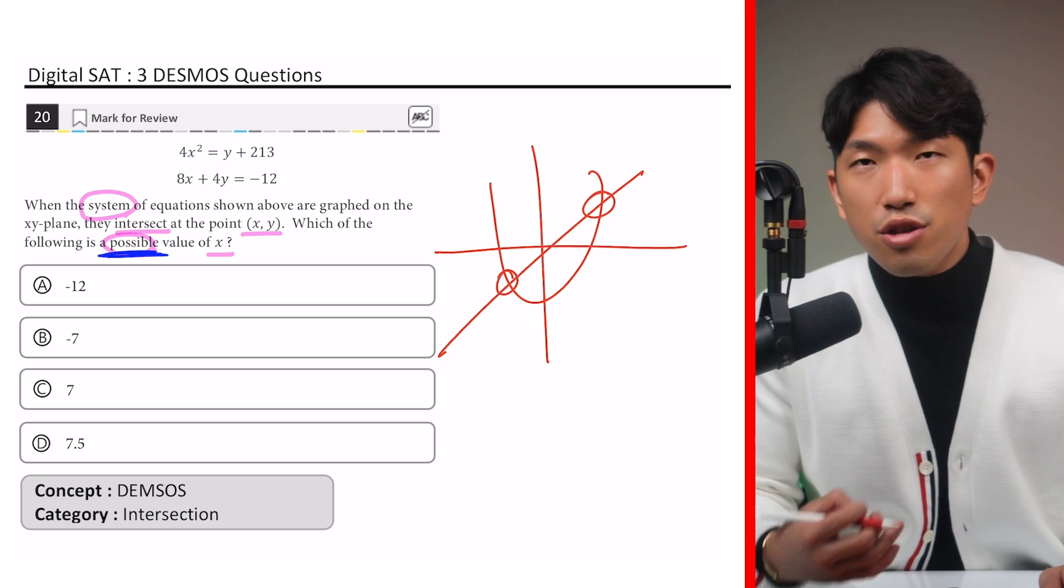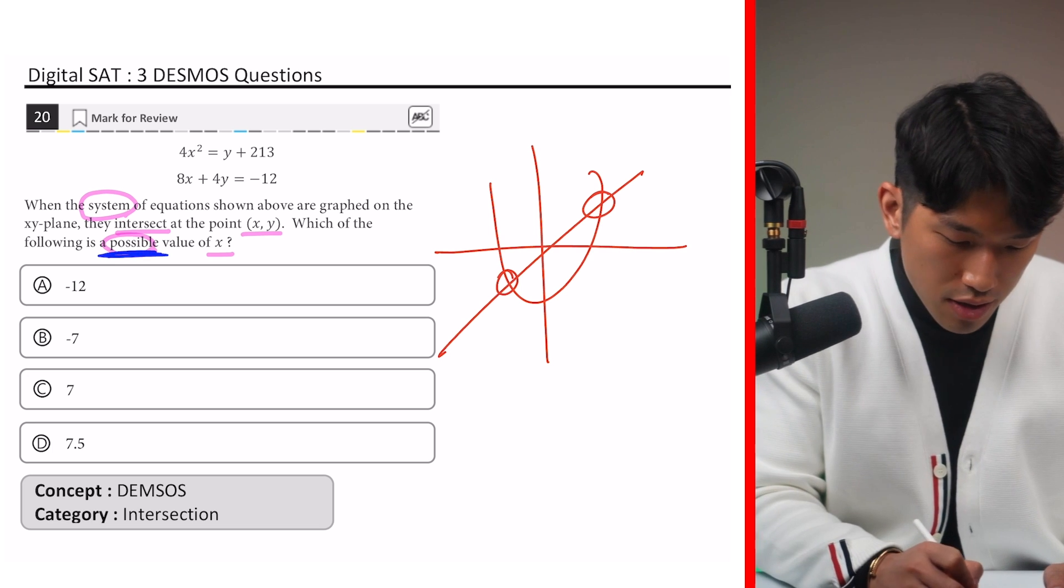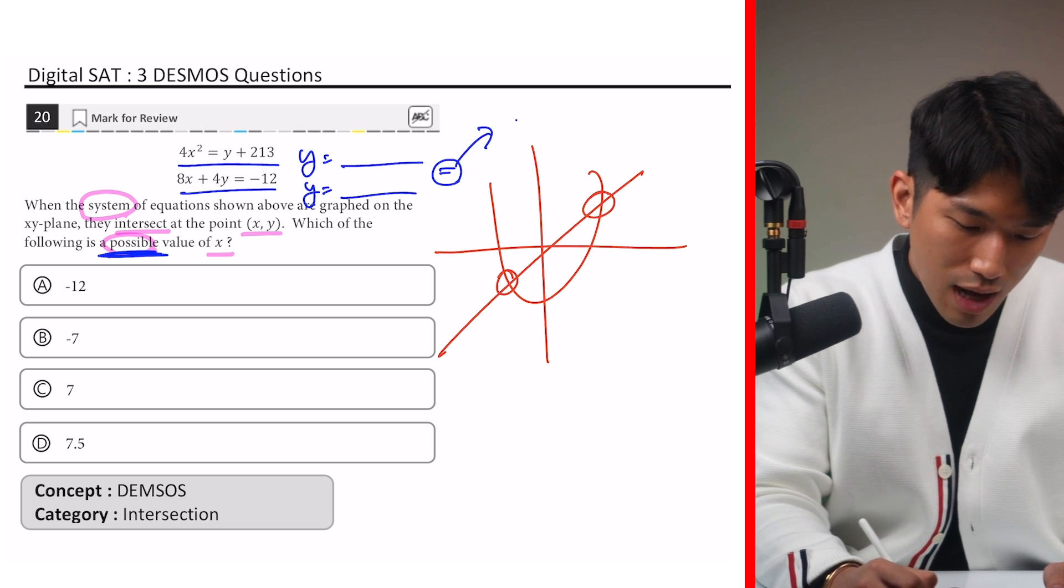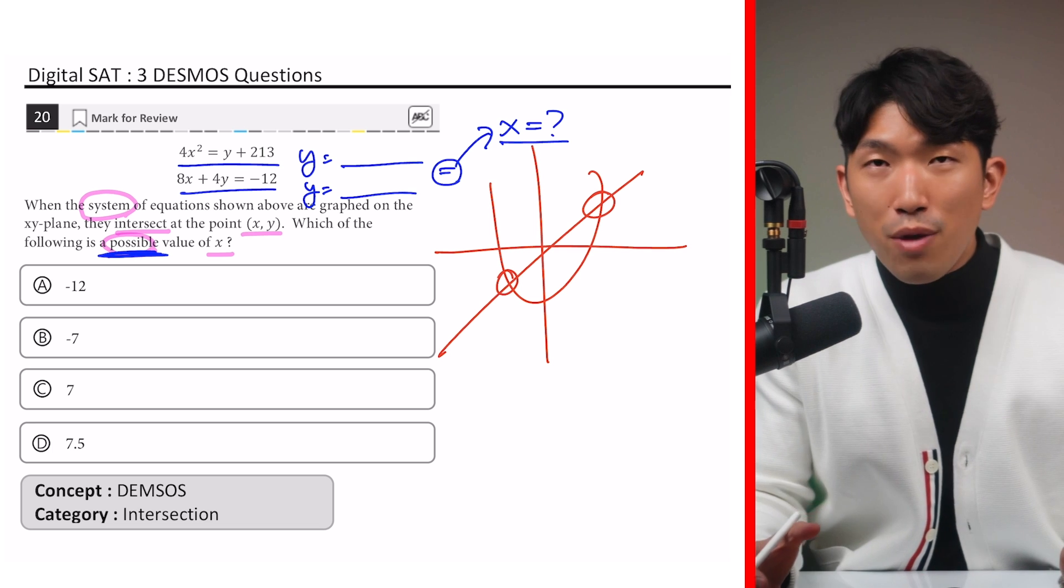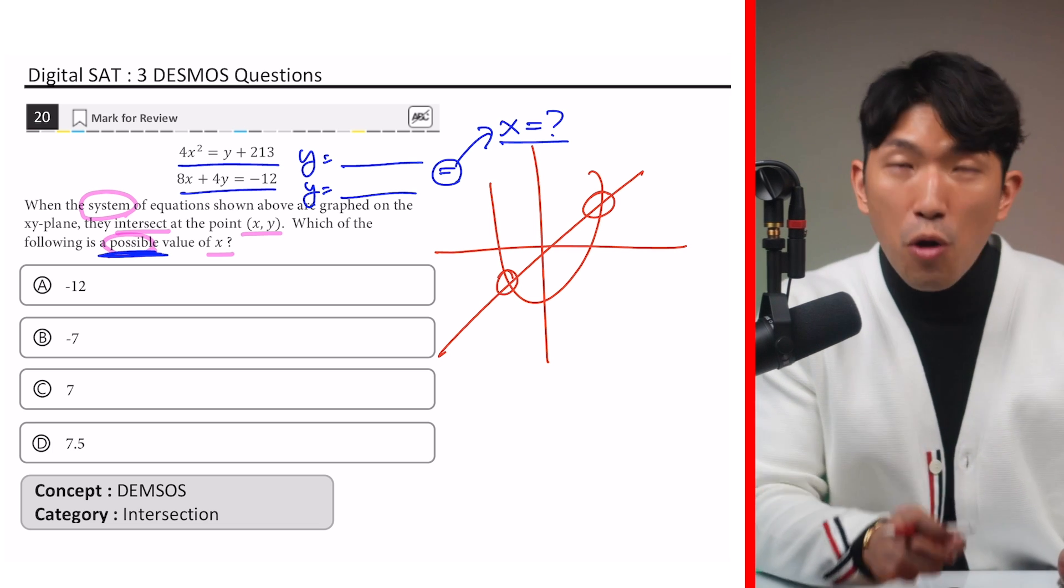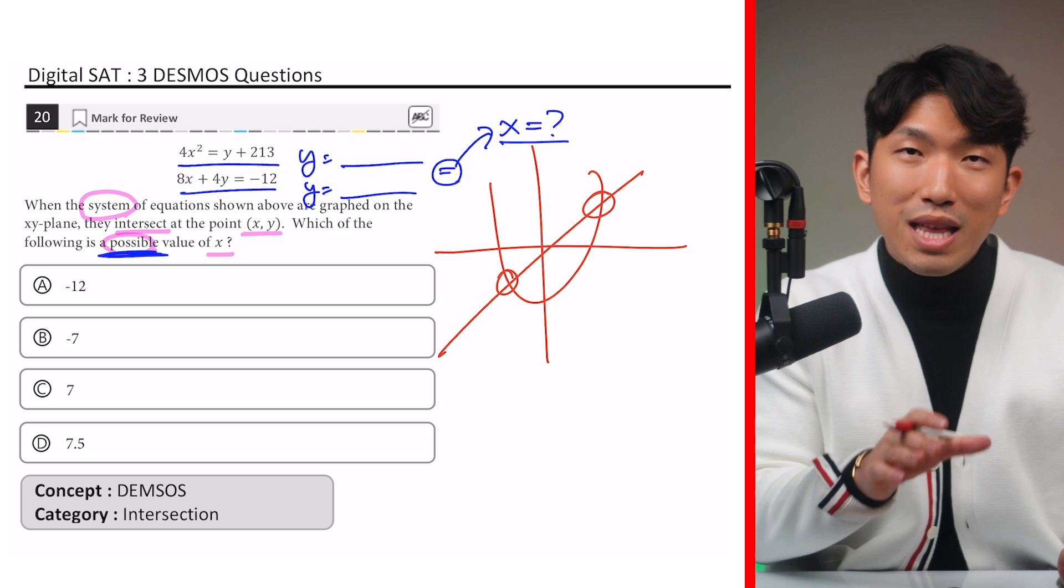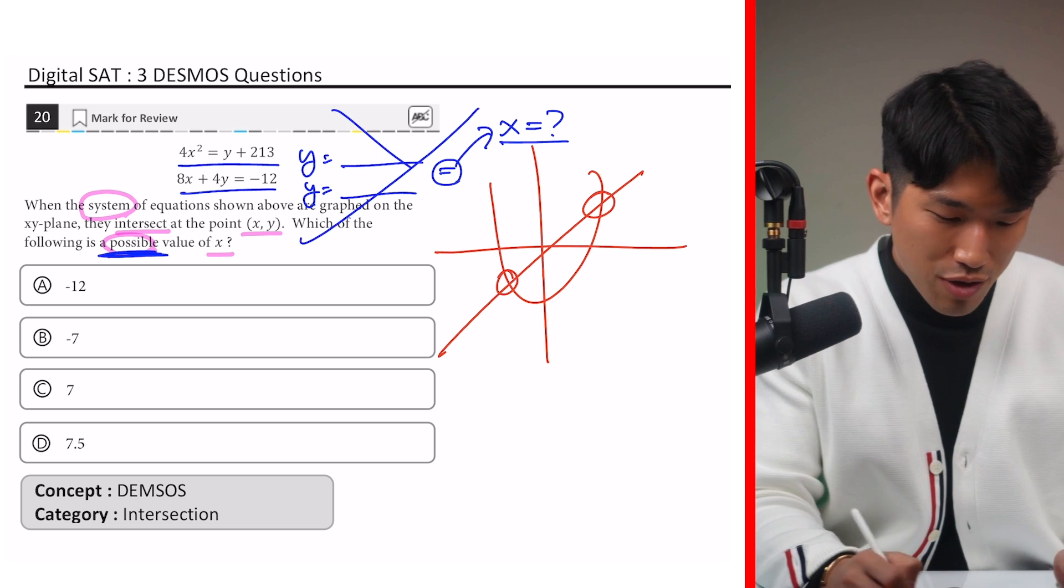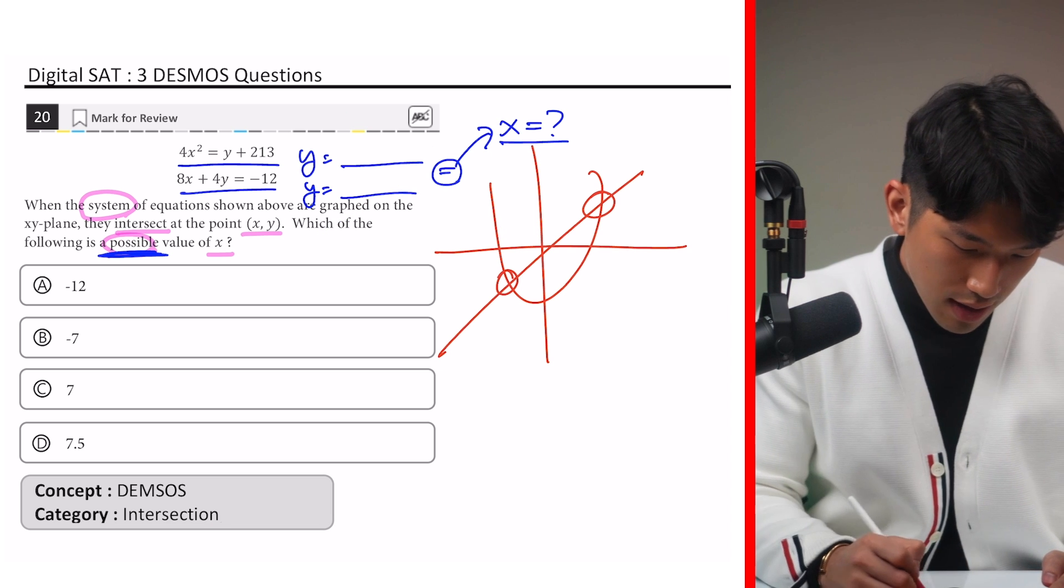When you're finding the intersection on the paper SAT, all you had to do was set the equations equal to y, and set the resulting portions equal to each other and find out what the x-value is. And by the way, for the digital SAT, you should still know how to do this because some questions cannot be solved with Desmos. But for this question, you don't have to do it this way. Instead, we're going to use Desmos.